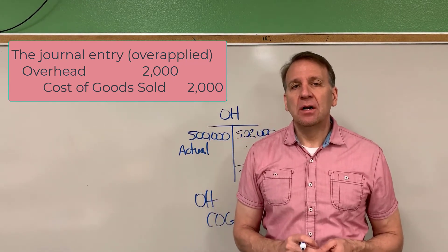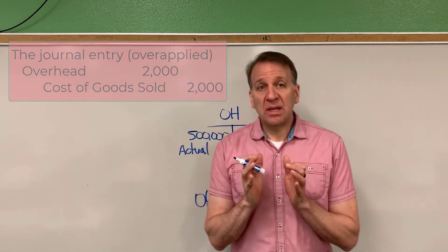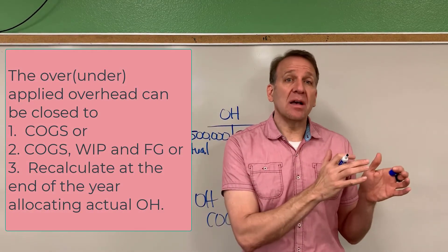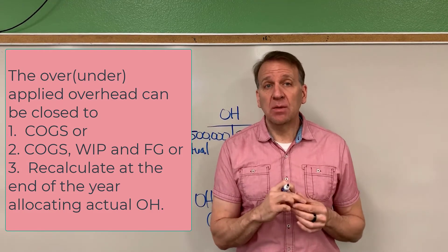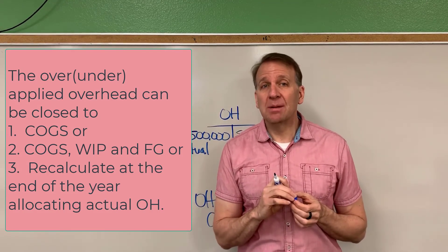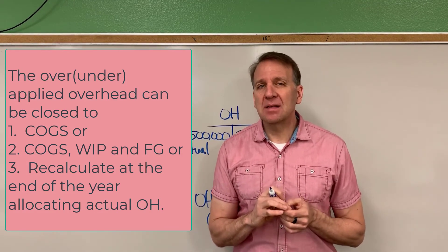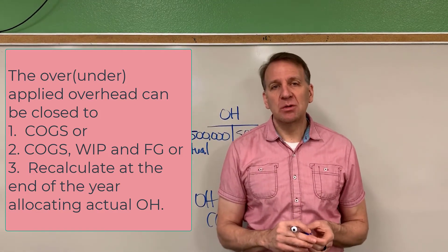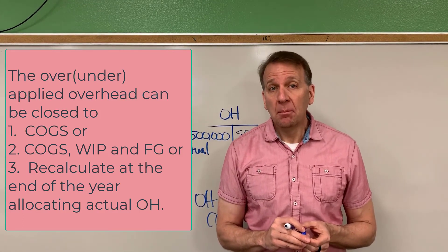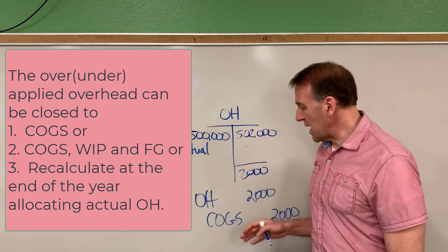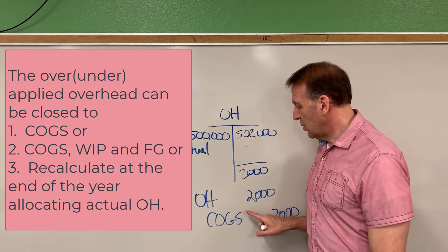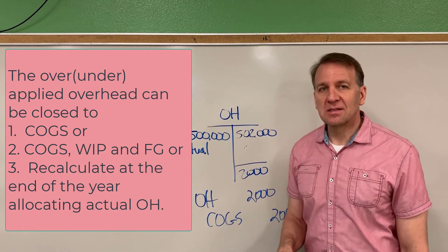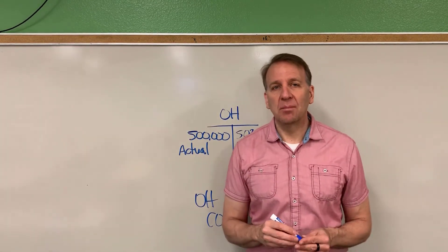Some accountants prefer to allocate this between work in process, finished goods, and cost of goods sold. That's acceptable and probably a little more accurate. But if the amount isn't too material — like this $2,000 — most of it would just be in cost of goods sold anyway. But if you wanted to, you could take a percentage and put some in cost of goods sold, some in finished goods, and some in work in process.